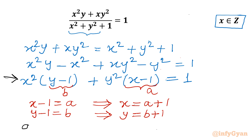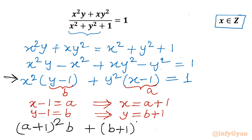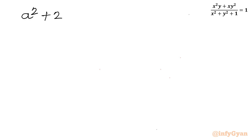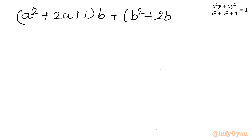So x² becomes (a+1)², and (y-1) is b. Then y² becomes (b+1)², and (x-1) is a. The right-hand side is 1. Expanding: (a² + 2a + 1)·b + (b² + 2b + 1)·a = 1.